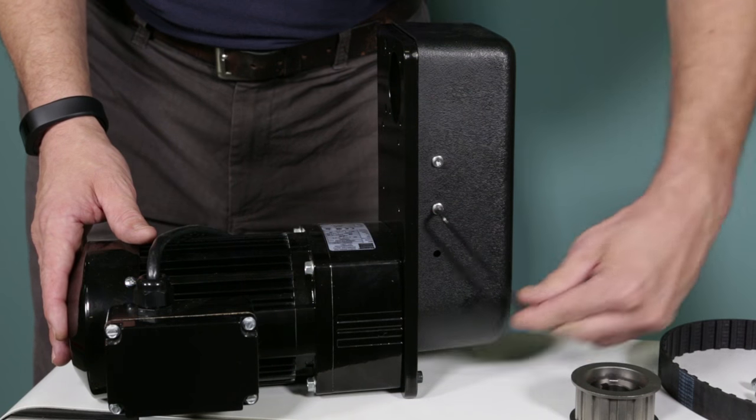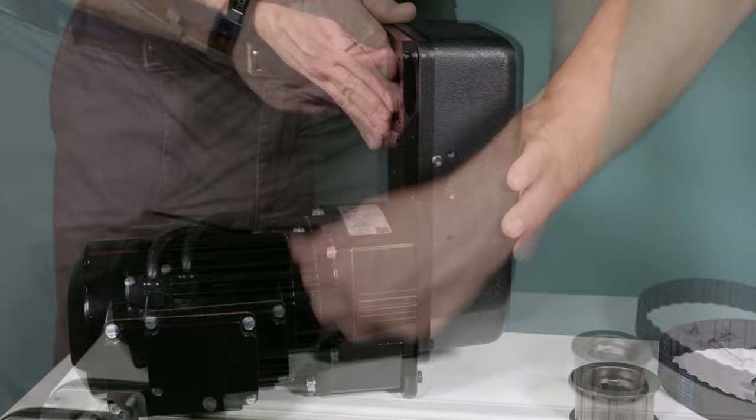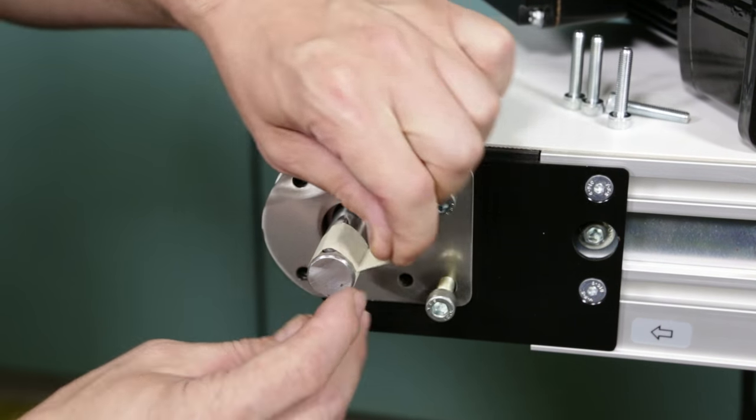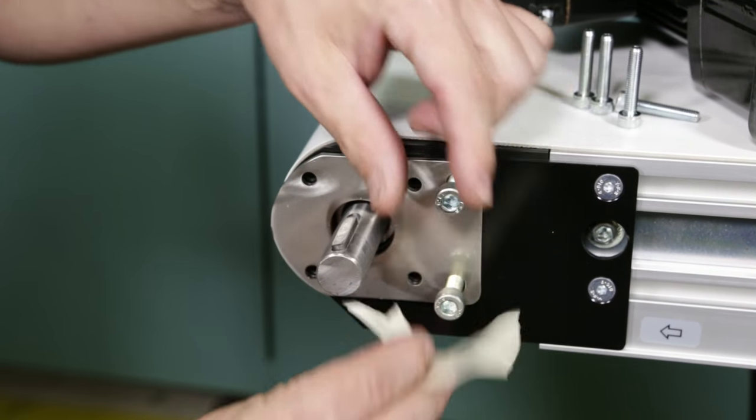Remove cover screws, then remove cover. On the drive outpush shaft, locate the key and make sure it's in place.